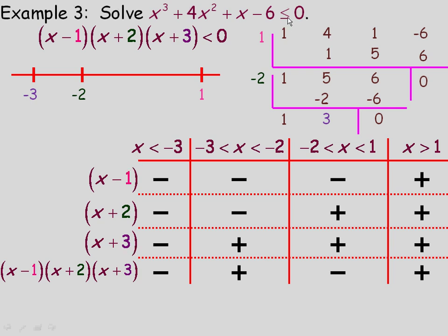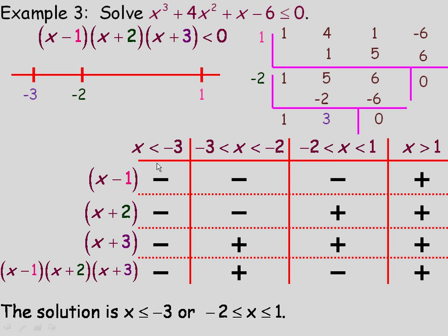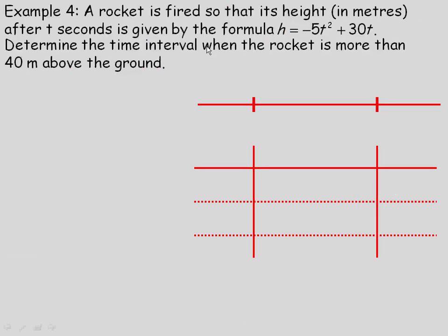We're looking for where this is less than or equal to 0, so we want the negative intervals. The interval x less than negative 3 is one solution, and the interval between negative 2 and 1 is the other. Since there's an equality sign, we include the endpoints, so the solution is x less than or equal to negative 3, and negative 2 less than or equal to x less than or equal to positive 1. On the graph, we place a solid dot at negative 3 with everything to the left, and the closed interval from negative 2 to 1.